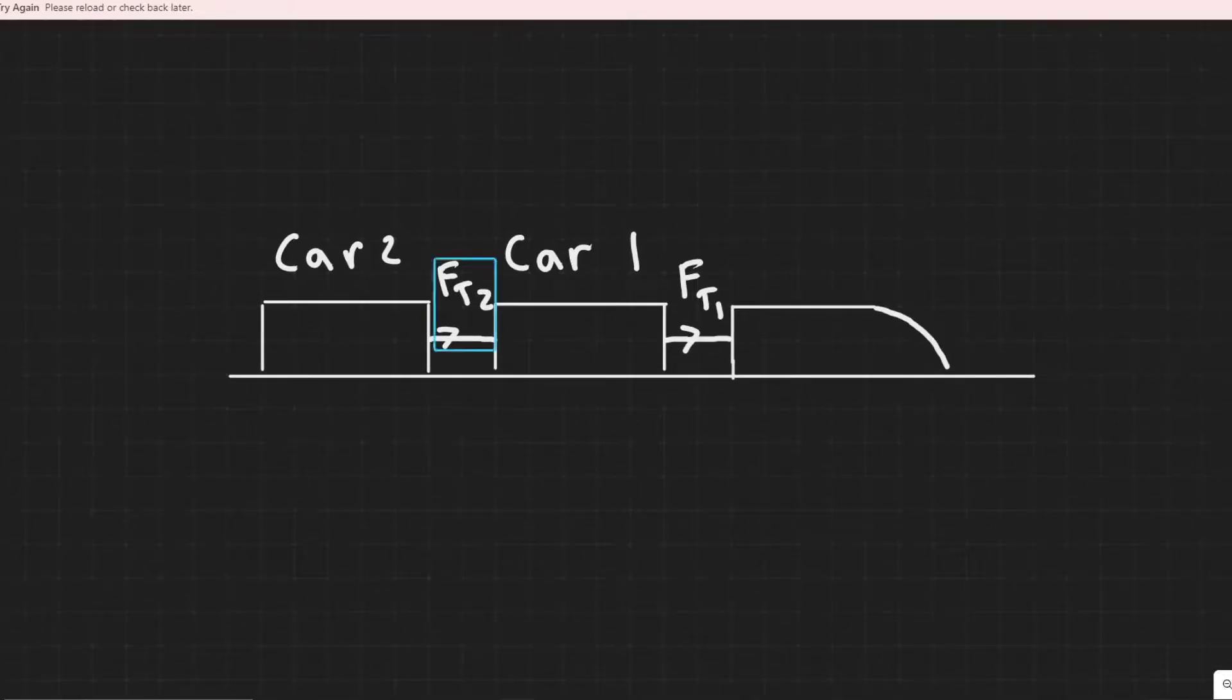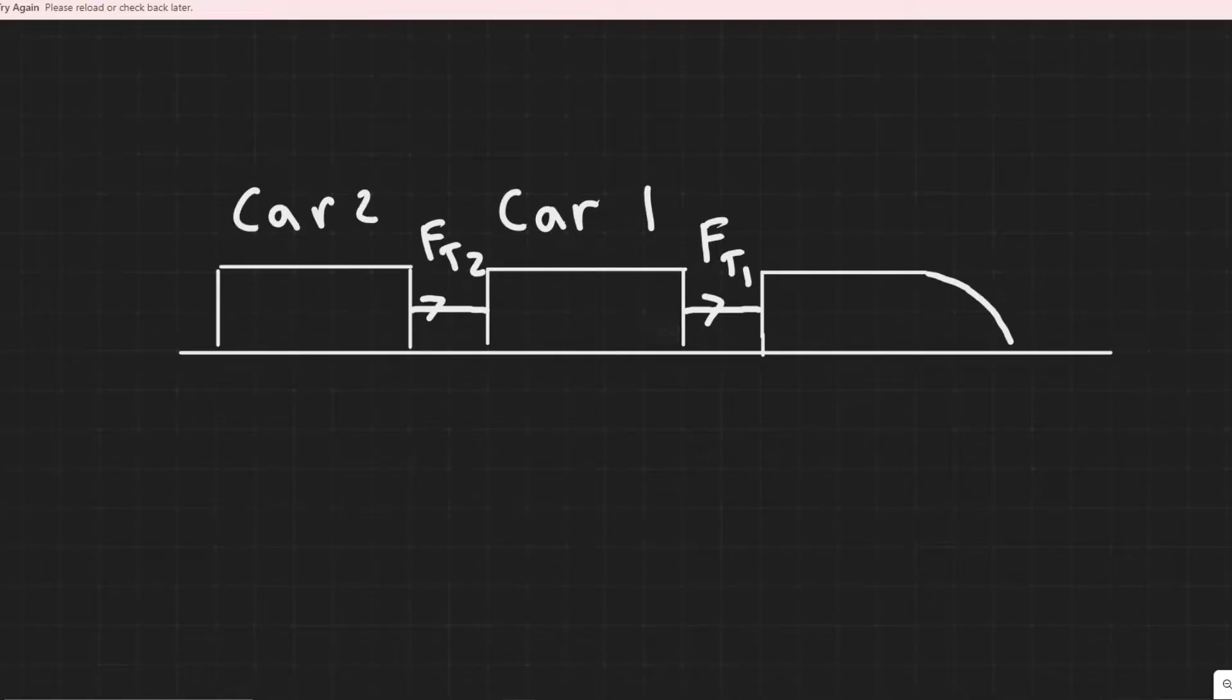So I went ahead and drew our diagram here. We have car 2, car 1, and then our main car which is pulling them. We know the mass of them is going to be the same, so I'm just going to denote that with M. And then we know there's going to be tension in these cords pulling them.